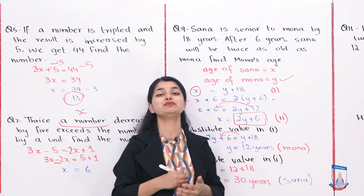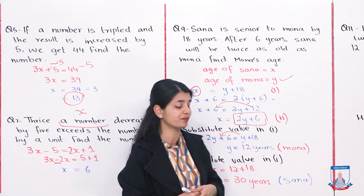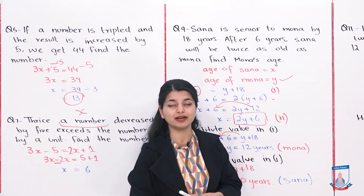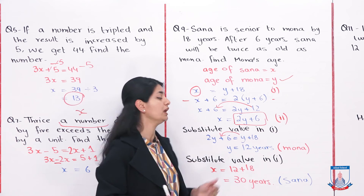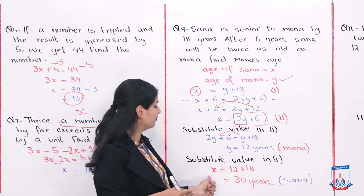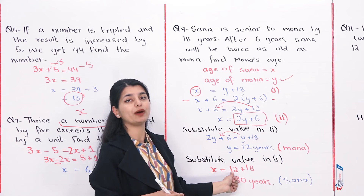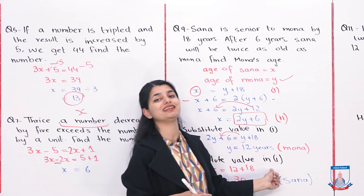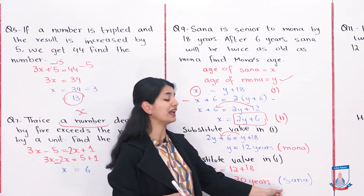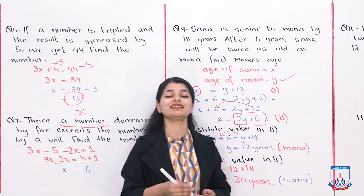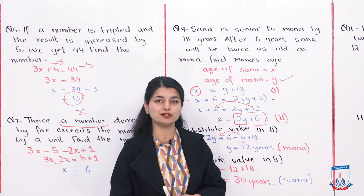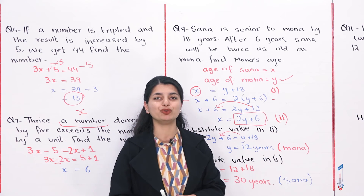Mona's present age is 12 years. To find Sana's age, we use x equals y plus 18, so x equals 12 plus 18, which is 30. Sana's age is 30. Using two variables, we have found both x and y values.